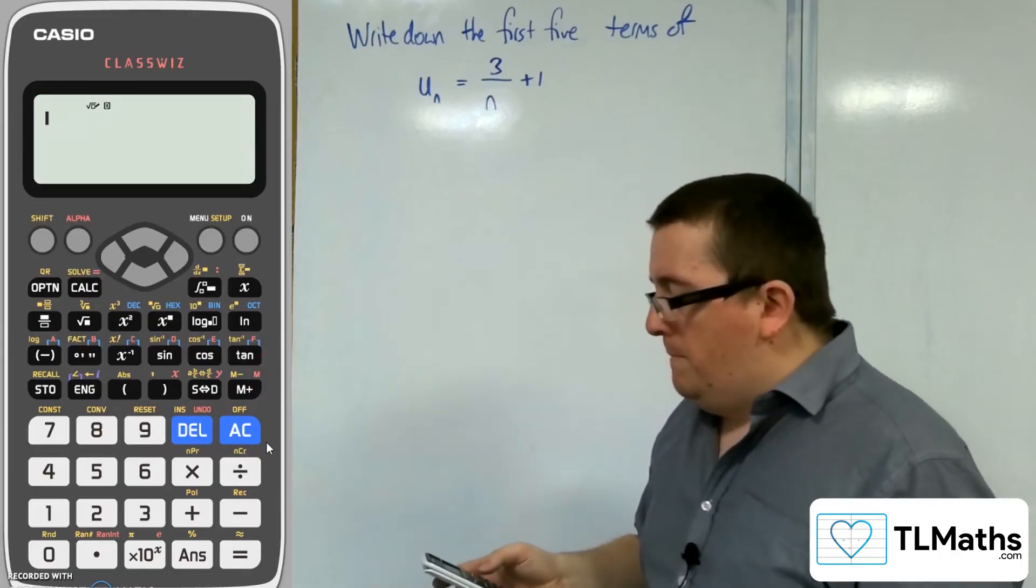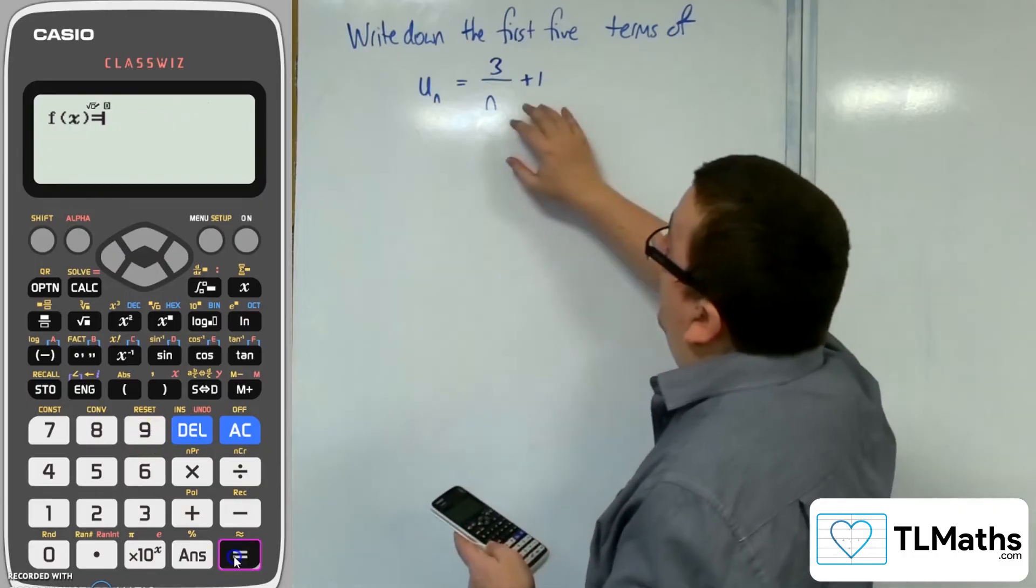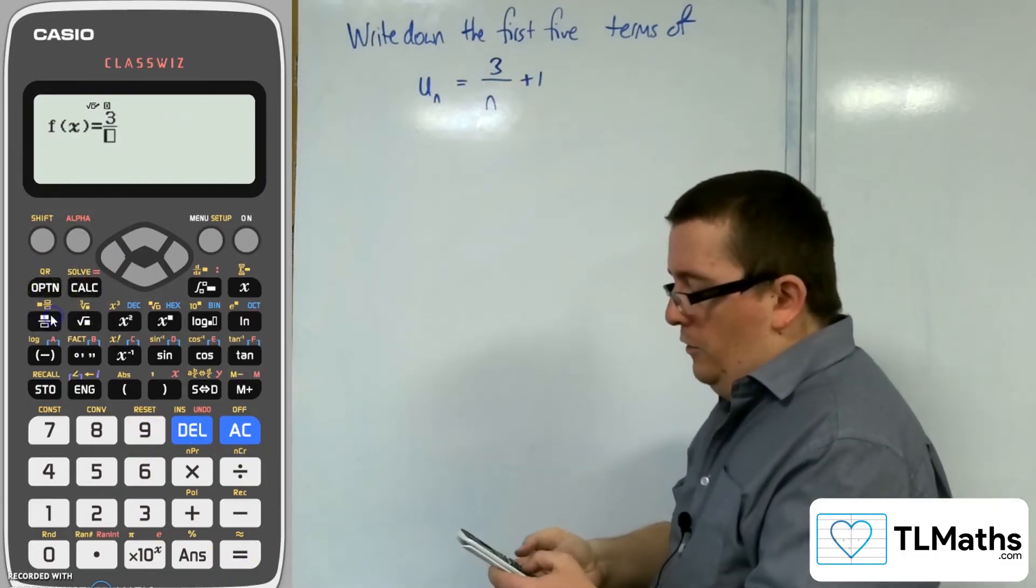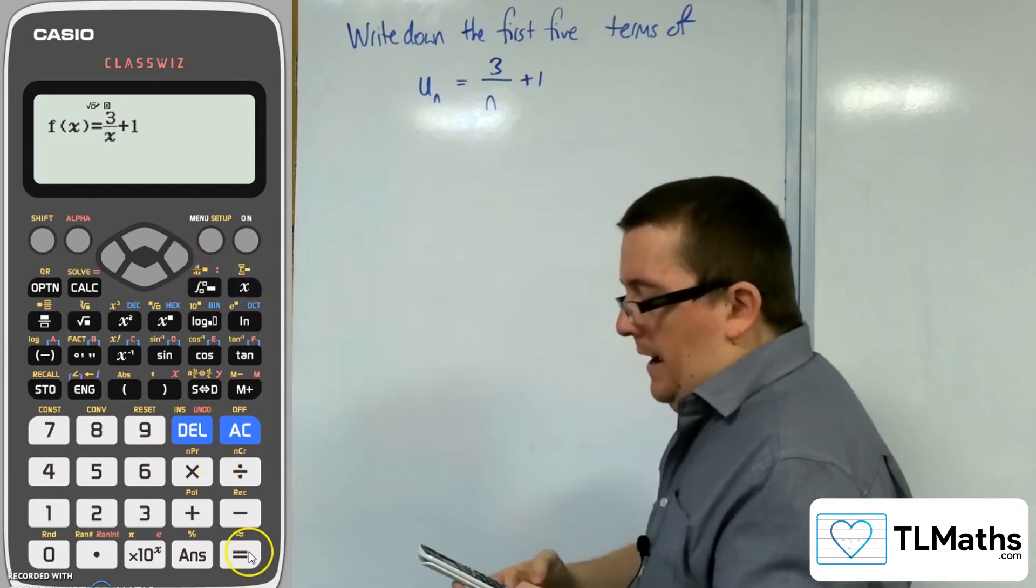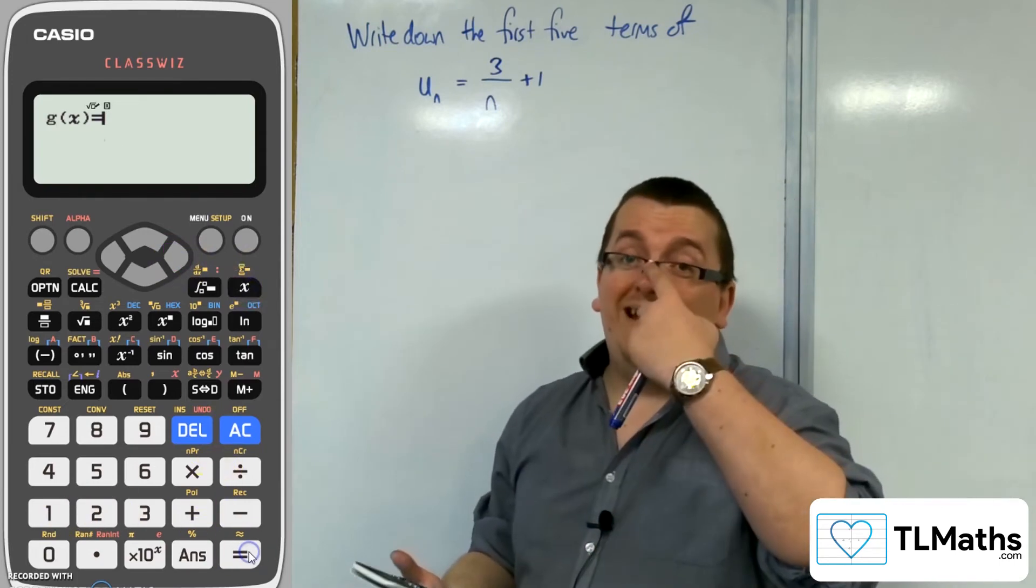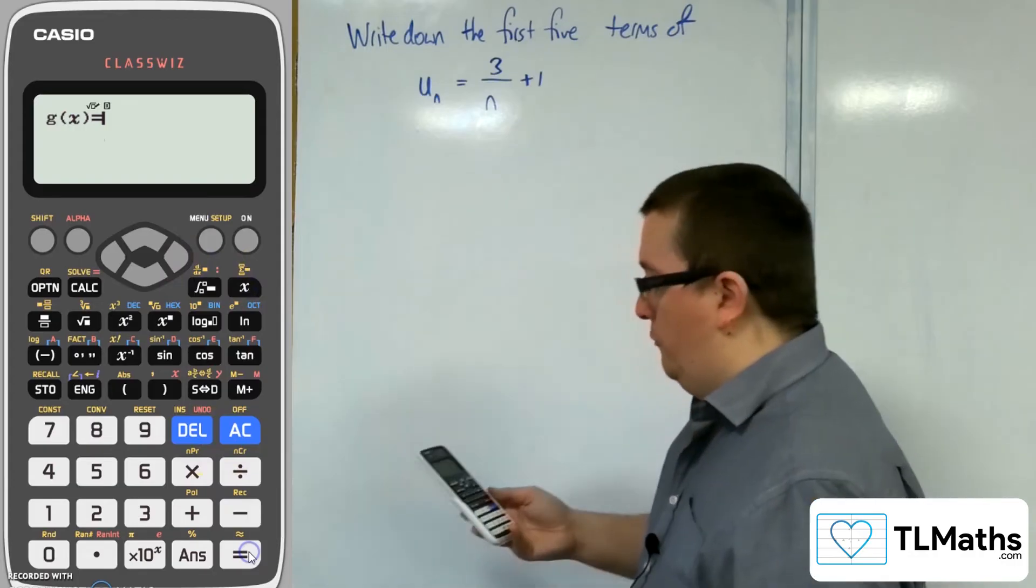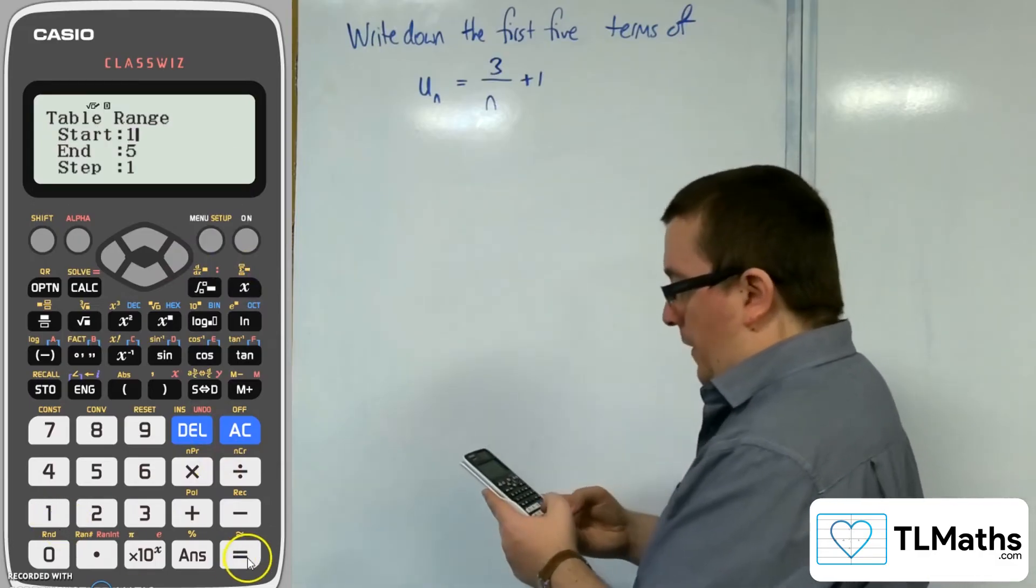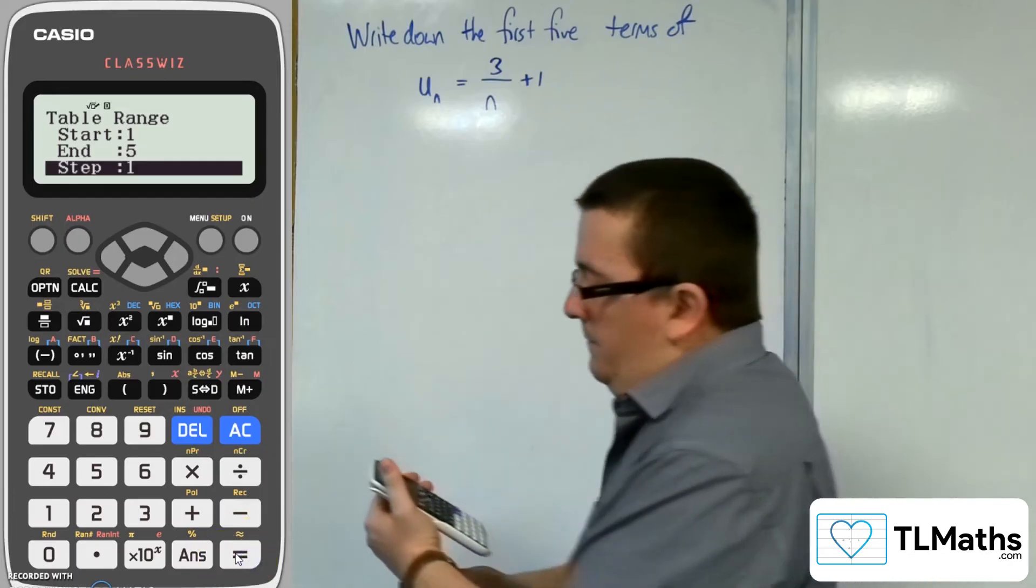Another example is to write down the first five terms of this sequence. If you go to menu and then go to number 9 for table, the f(x) we want to type in as the 3/x + 1. You want to use the 3 over the x button, top right-hand corner, plus 1. You'll come up with a g(x), so you can do two different sequences at the same time if you like, or two different functions. I'm going to start at 1, end at 5, and we're going to go up in 1s.